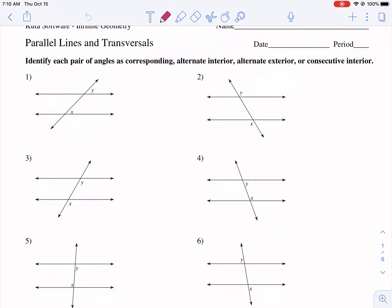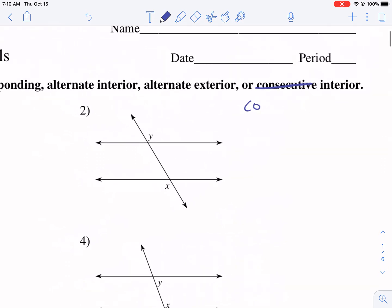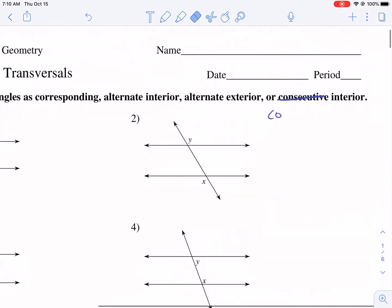Identify each pair of angles as corresponding, alternate interior, alternate exterior, or consecutive interior. I call this same side interior. So consecutive and same side is essentially the same thing. If you want to write consecutive that's okay, but I specifically teach same side.